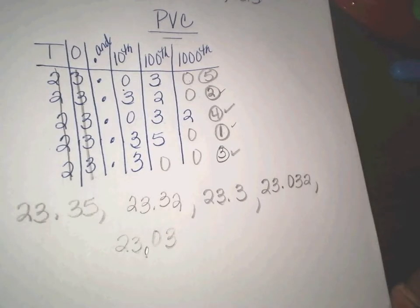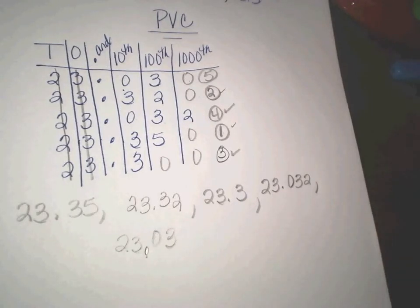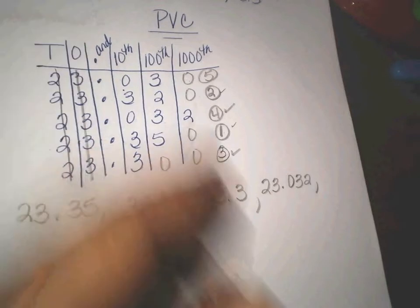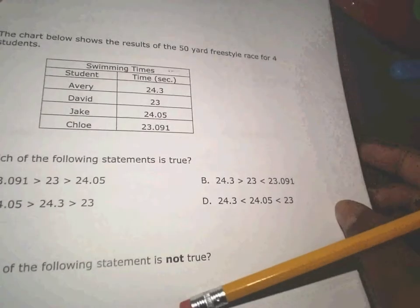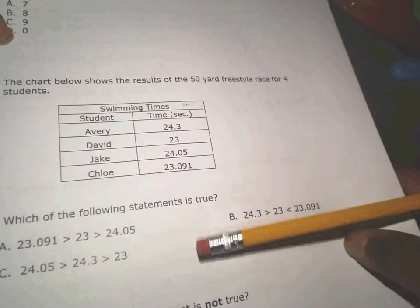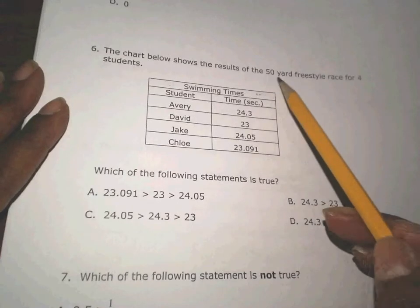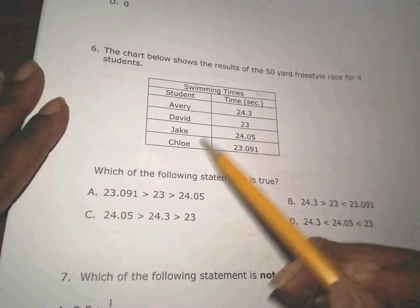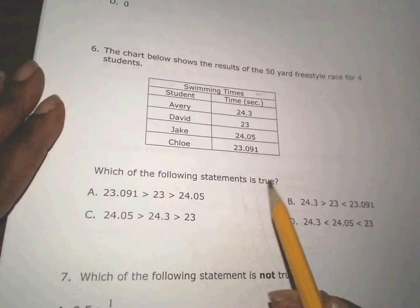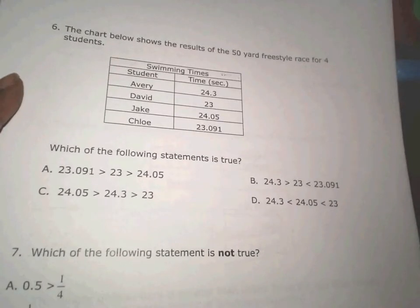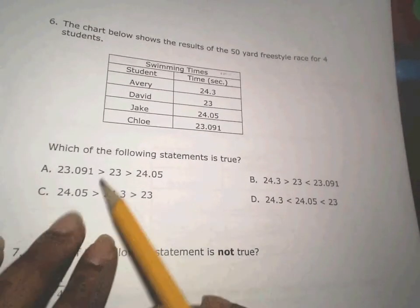When comparing and ordering whole numbers and decimals, use a place value chart to organize your data. Now I'll show another way to look at numbers. On this worksheet, a chart shows the results of a 50-yard freestyle race for four students, listing their times. The question asks which of the following statements is true. This is another way to handle comparing numbers, and here I'll compare only two numbers at a time.